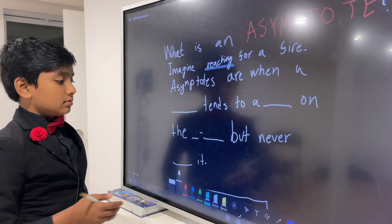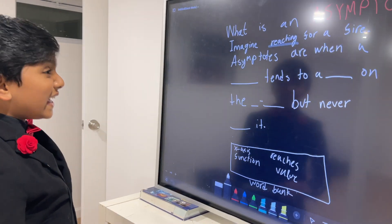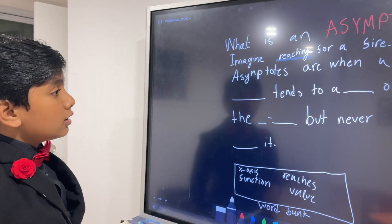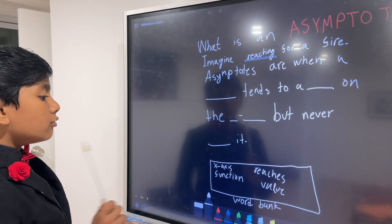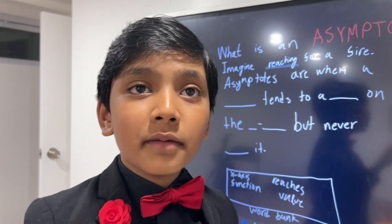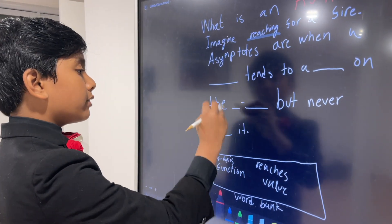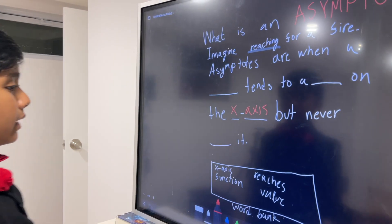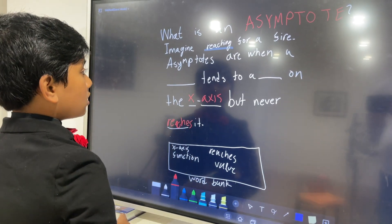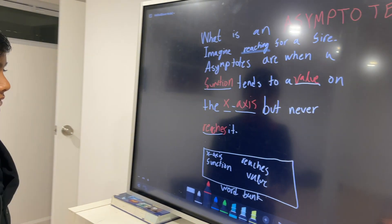That is what we know about asymptotes so far. Fill this out with the word bank: blank tends to a blank on the blank blank, but never blank it. Asymptotes are when a function tends to a value on the x-axis, but never reaches it.